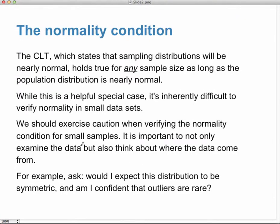The normality condition — that the sampling distribution will be nearly normal — holds for any sample size as long as the population distribution is nearly normal. If the distribution you're sampling from was normal to begin with, the distribution of x-bars will also be normal for any sample size, even a sample of size 5.